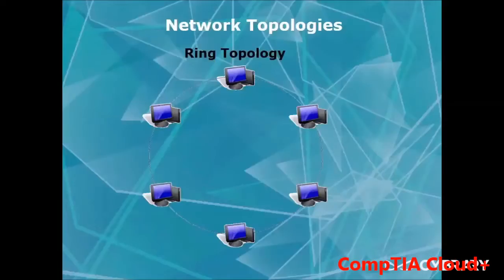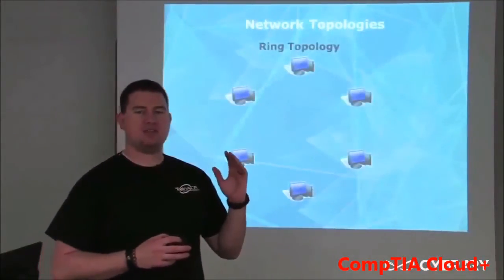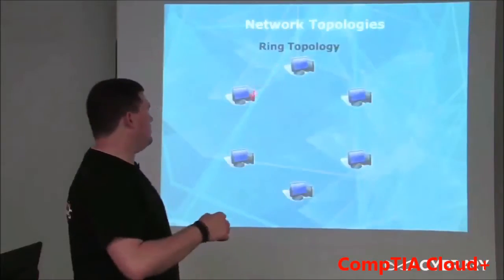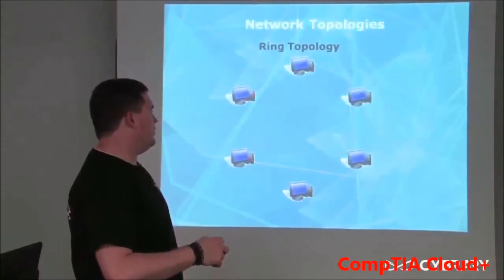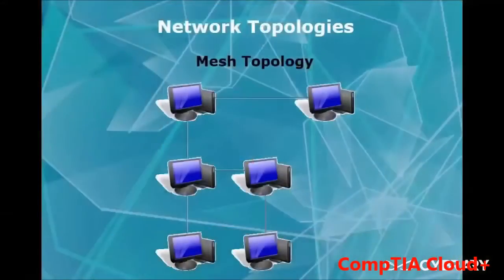The next topology is Ring. This is where each computer has two connections and is connected in a continuous circle. There's a token that's passed around each one of the nodes, but if there is a break anywhere in the line, the whole network goes down. A downfall is that whenever information is passed from one computer to the next, it has to go in a complete circle, so a computer may have to wait its whole turn before receiving information.